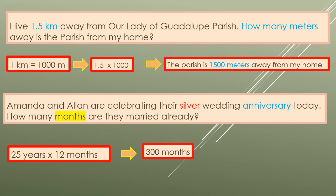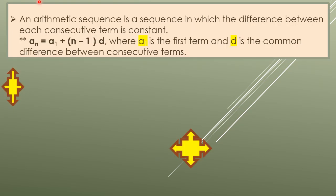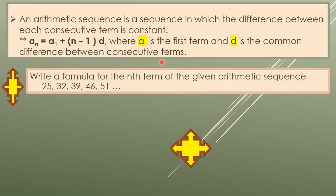For our next example, let's talk about sequences. An arithmetic sequence is a sequence in which the difference between each consecutive term is constant. When you subtract two consecutive numbers, the differences are the same. The formula is: a sub n equals a sub 1 plus, subtract one from the total number, multiplied by the difference. a1 is the first term and d here is the common difference between the consecutive terms.